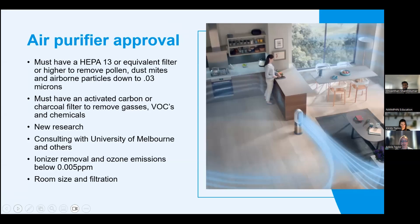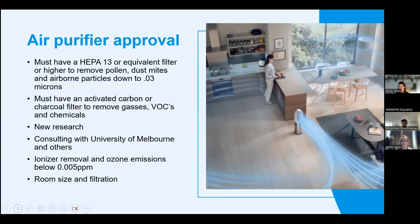Our most popular category is air purifiers. To be considered for Sensitive Choice approval, you must have a HEPA-13 or equivalent filter — or higher — that removes dust mites, pollen, and airborne particles down to 0.03 microns, with independent laboratory testing showing removal at a rate of 99.97%. An activated carbon or charcoal filter is also mandatory, to remove gases, VOCs, and other chemicals such as formaldehyde, and we must see test results for ozone emissions.